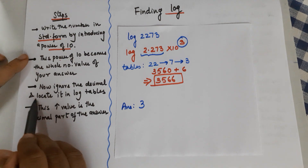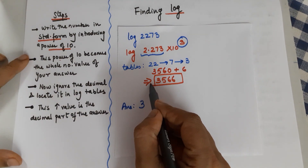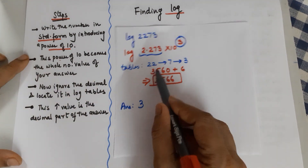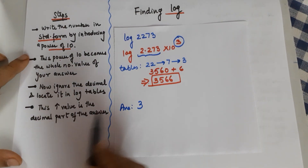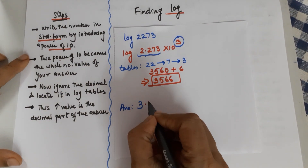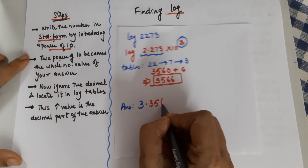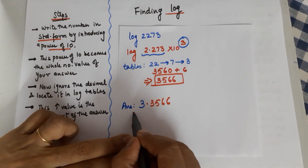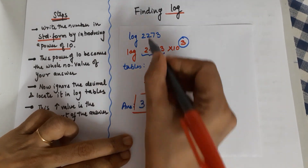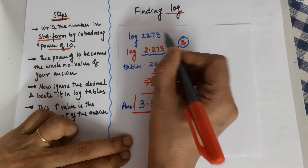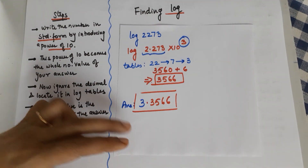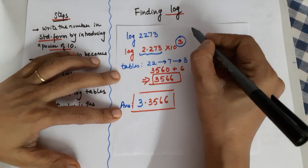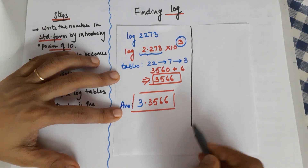This value from the table is the decimal part of the answer. So the answer for log of 2273 is 3.3566.